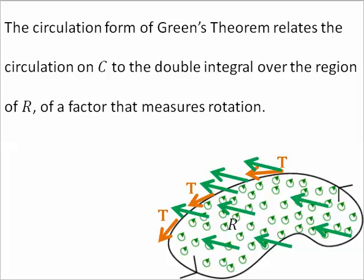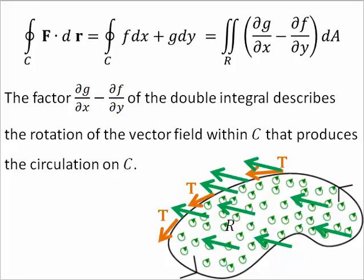The factor — G partial X minus F partial Y — in the double integral over the region represents the property of the vector field within C that produces the circulation on C. It is called the two-dimensional curl of the vector field.